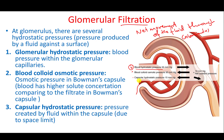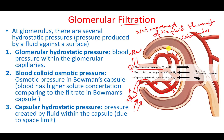The first driving force is the blood hydrostatic pressure, which is the blood pressure within the glomerulus. The blood comes through the afferent arteriole and exits through the efferent arteriole, and the afferent is larger than the efferent, so there is always more blood coming in and less blood exiting. This means that inside the glomerular capillaries we have higher blood pressure.